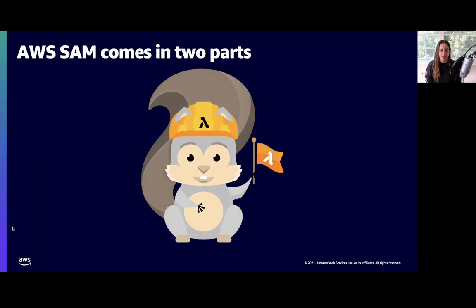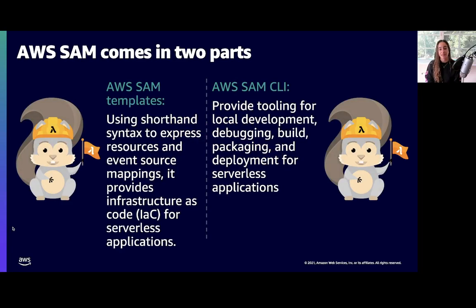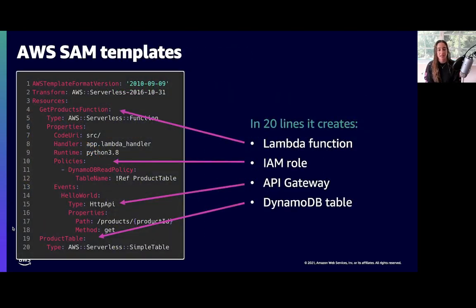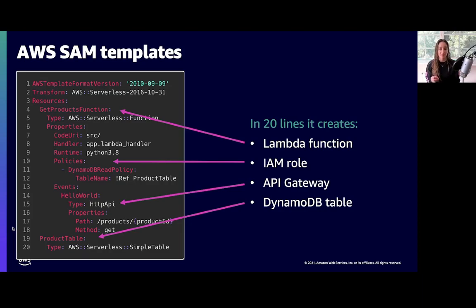SAM comes in two parts. The first is the AWS SAM templates, which we've already talked about, allowing you to version your infrastructure as code. The second is the AWS SAM CLI, or command line interface — a utility you install on your local machine that helps you with local development, debugging, builds, and deployment for your serverless application. Here's what an example SAM template looks like. It's written in YAML, and you can see a few resources being created: an AWS Lambda function, a DynamoDB table, and an API. The SAM template also includes the corresponding IAM role that lets the Lambda function talk to the DynamoDB table, and SAM templates simplify the policy options for you.